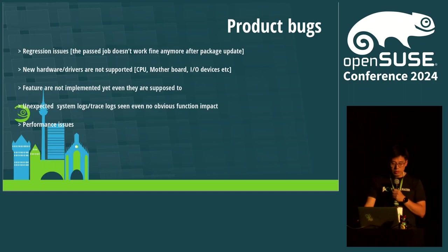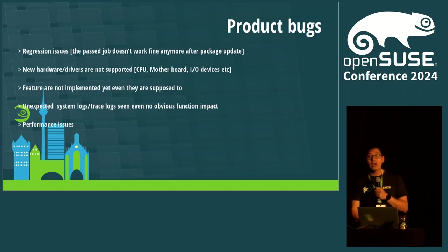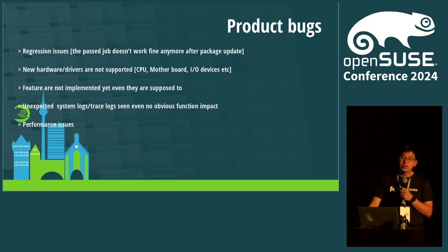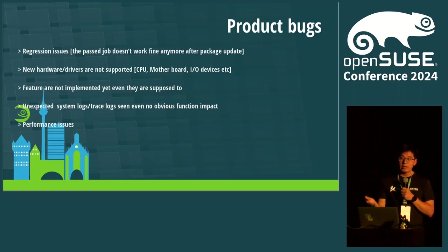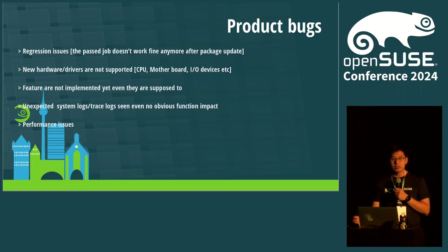The third type of product bug should be features. For example, we have some new features - security, FIPS, OpenSSL features. We are claiming the feature should be ready, but in general when we test the new feature, it's not. It's also a product bug.